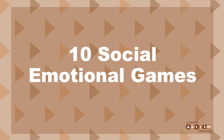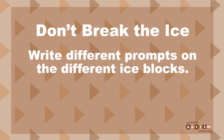Now let's get to the good part. Here are 10 social emotional games for children, and some of these games you may already have at your home. First, we have the game Don't Break the Ice. This is a great way to get children talking about their emotions. It's really easy to transform Don't Break the Ice into a social emotional learning game — simply write different prompts on the different ice blocks. You can use a dry erase marker so that you can change the prompts easily.